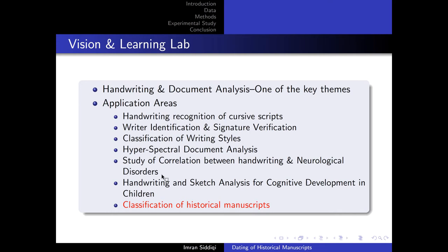As a part of the efforts to develop computational methods for analysis of handwriting, we are targeting multiple application areas. These include recognition of cursive handwritten text, identification of writer, signature verification. Recently, we are also targeting hyperspectral document analysis, specifically for signature verification. And then there have been a couple of projects on prediction of neurological disorders from handwriting, as well as the development of cognitive development in school-going children through analysis of their sketches and handwriting. But today, restricting to the theme of the conference, I will be presenting some of the findings on classification or dating of manuscripts.